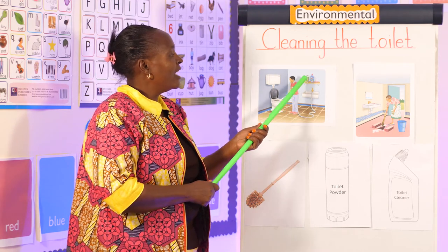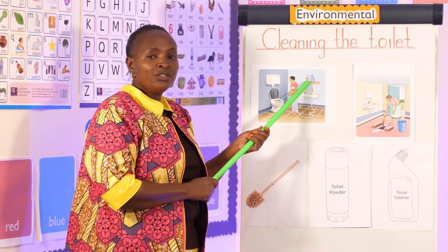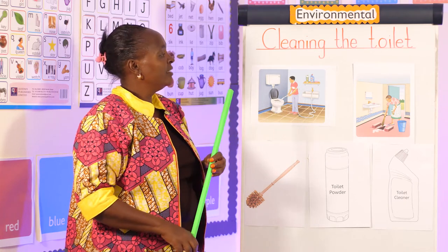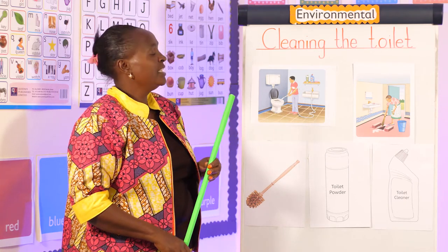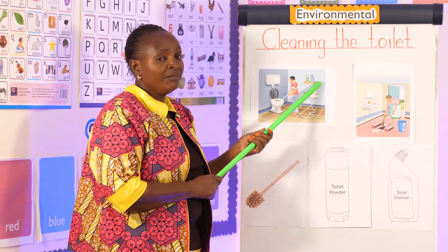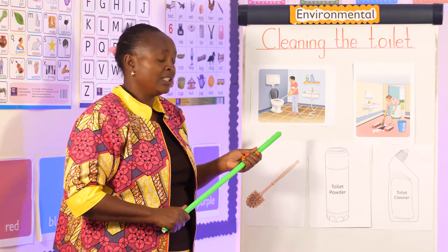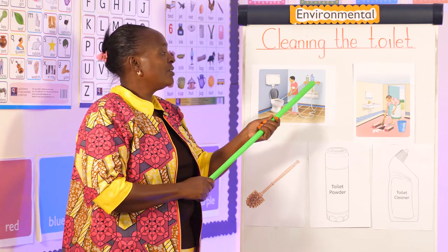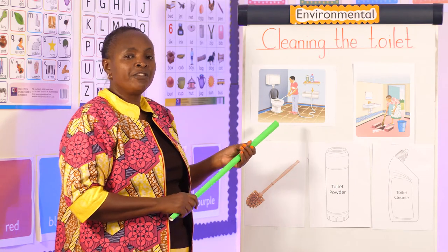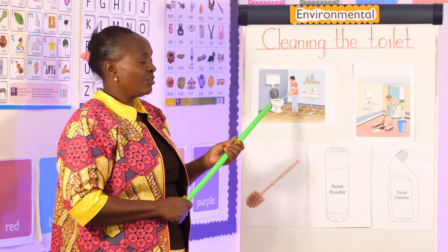There is a powder called Vim. There is also a piece of soap here, but it is not used to clean the toilet — it is used for washing our hands after we have finished using the toilet.